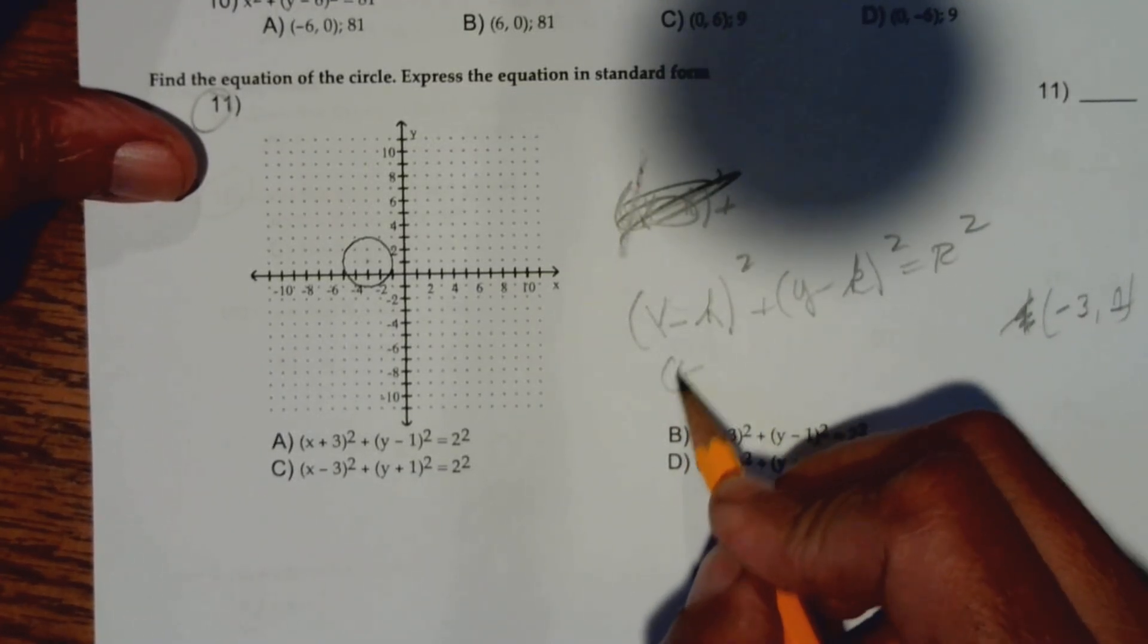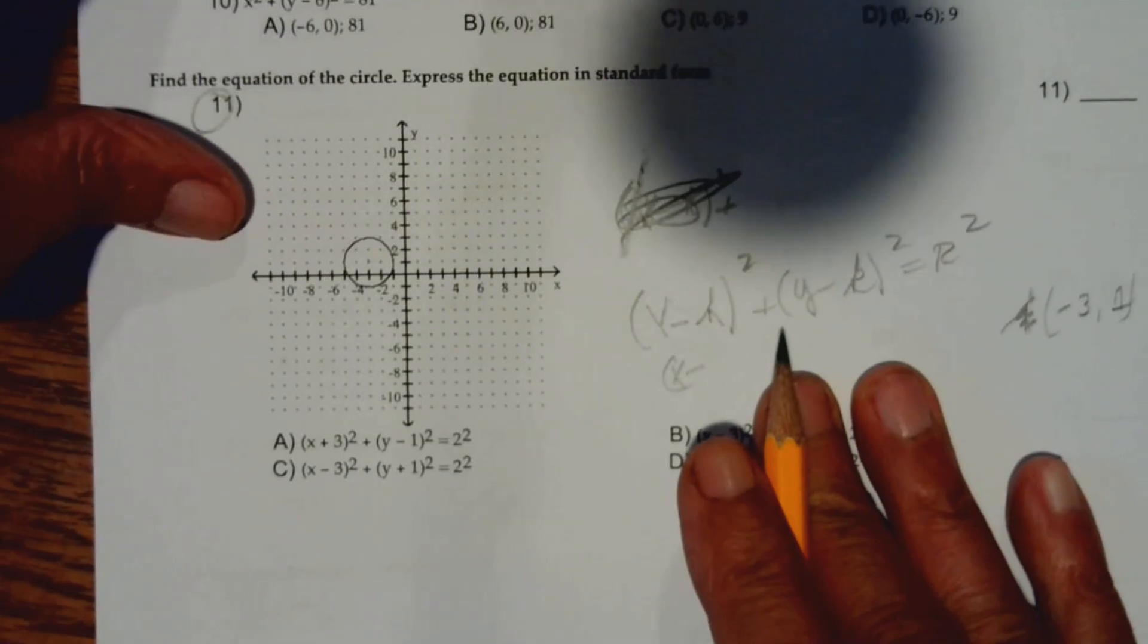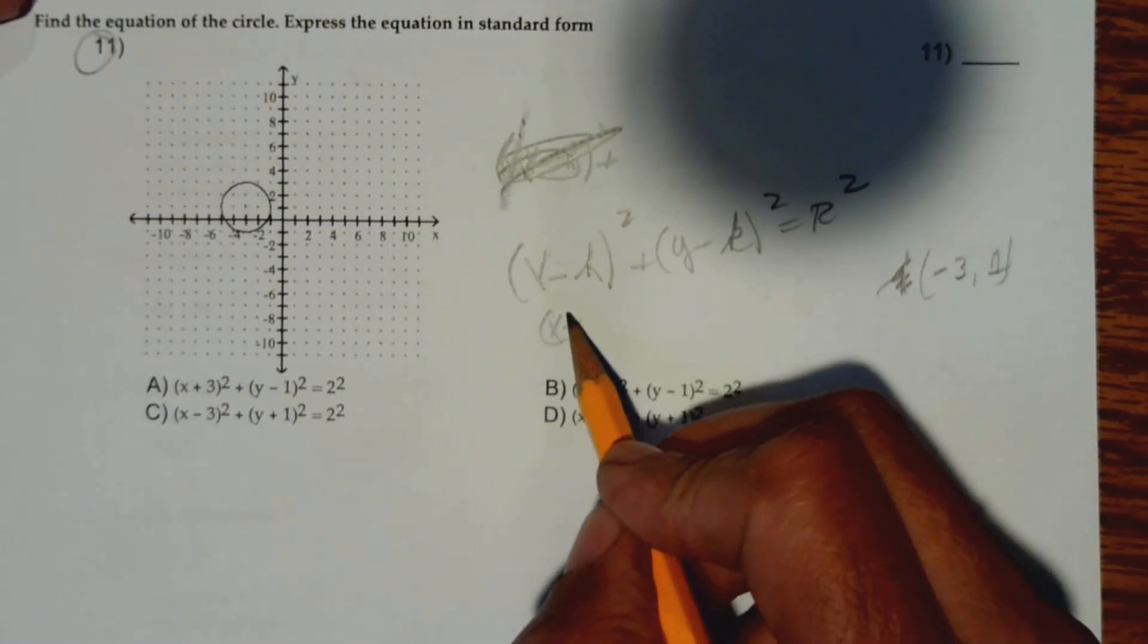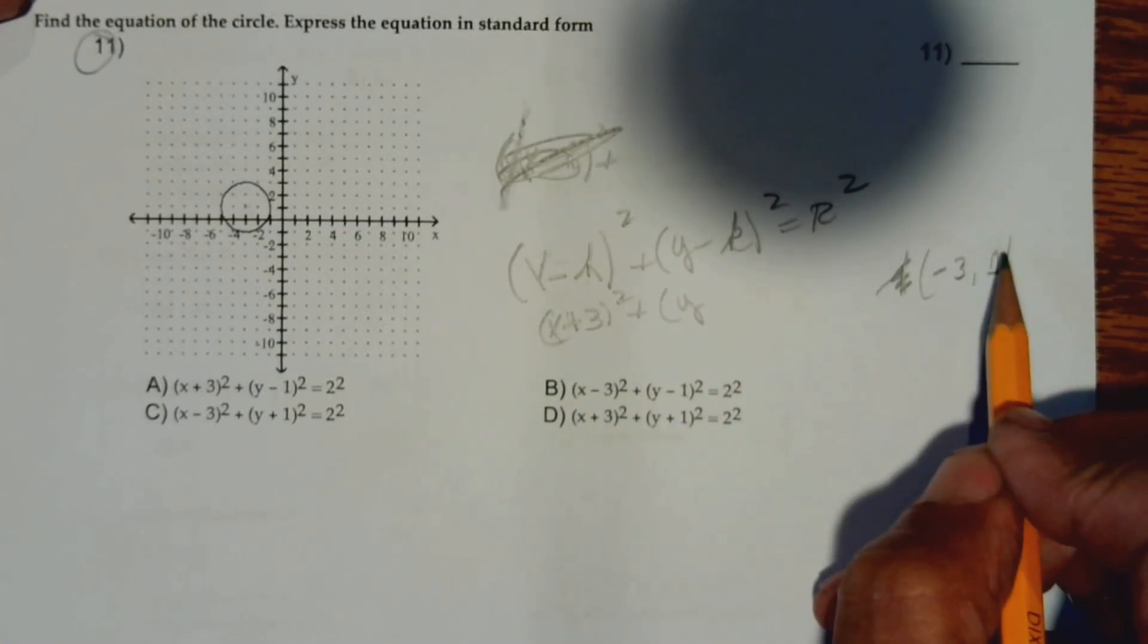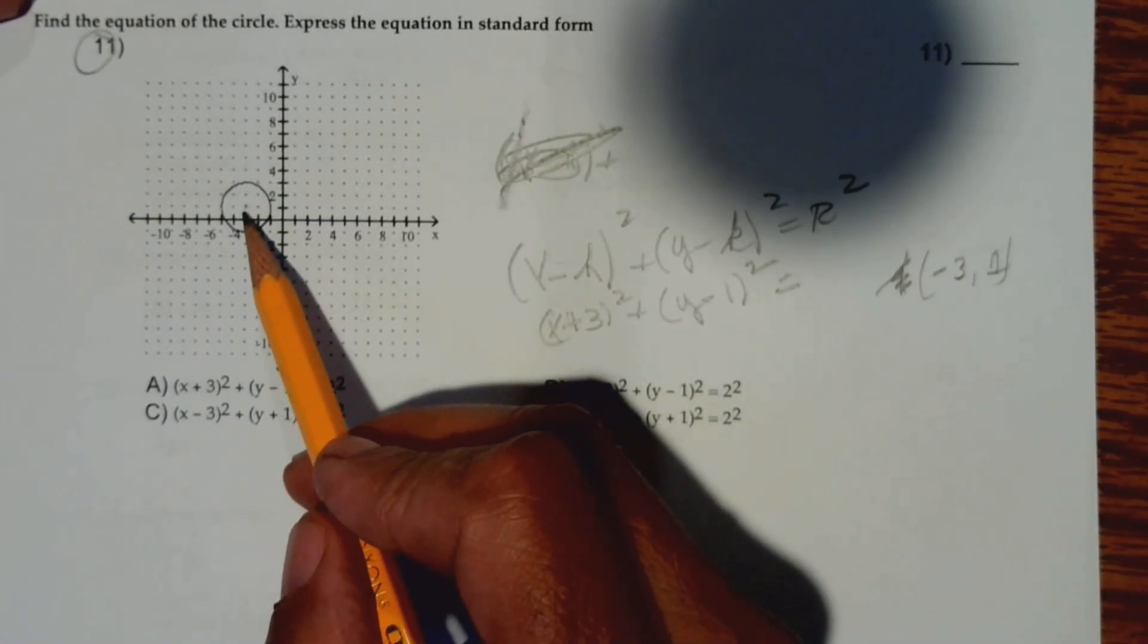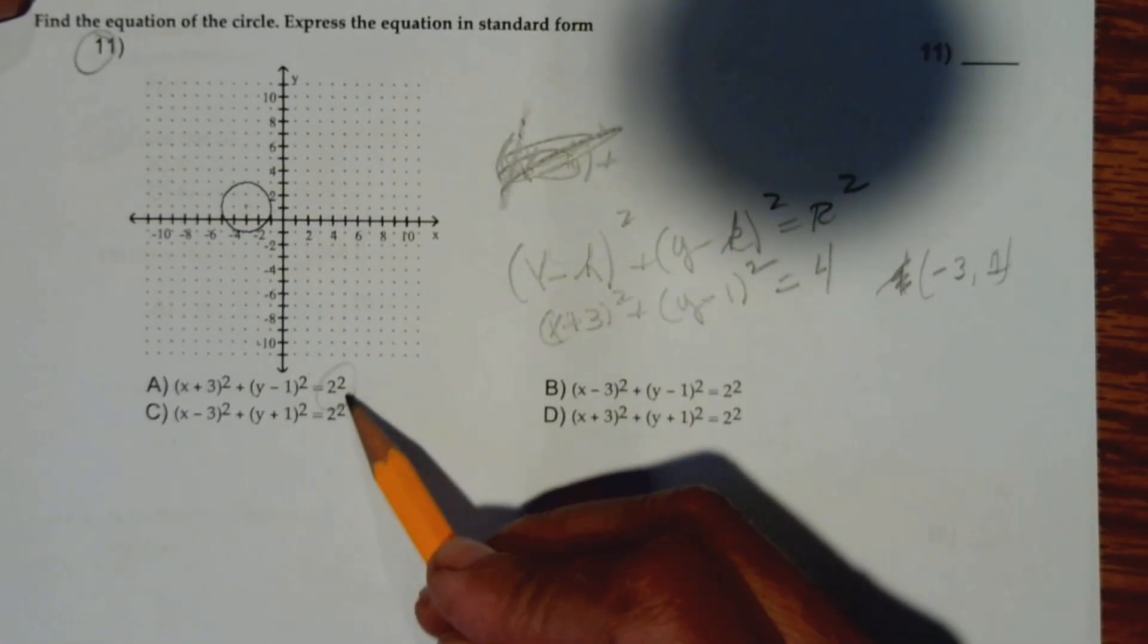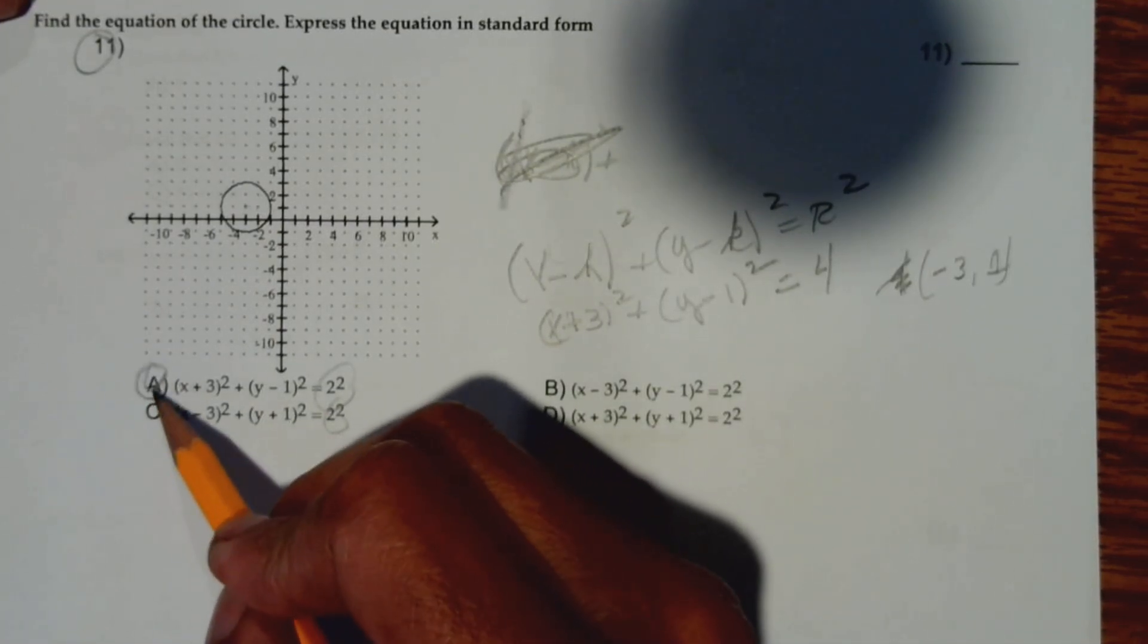So x minus my h value, x minus negative 3 is x plus 3, quantity squared, plus y minus k, where k is positive 1, so y minus 1, quantity squared equals the radius squared. The radius from the center of the circle is 1, 2, so 2 squared is 4, but they all have 2 squared here. So we're looking for (x + 3)² and (y - 1)², letter A.